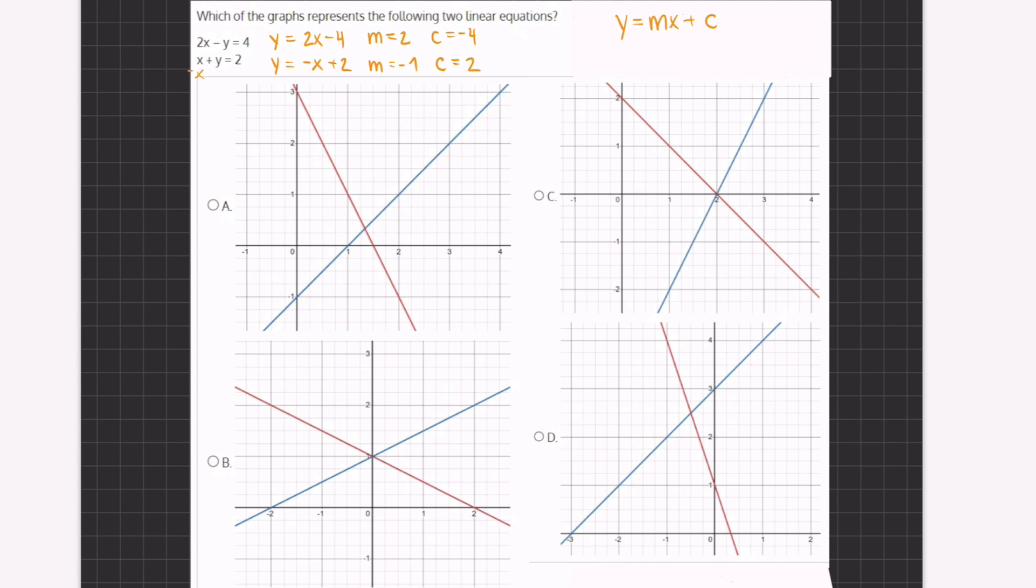Now, the easiest way to speed up our solution to find which graph represents both of these functions would be to focus on one specific element at a time. Now, usually the easier element to focus on would be the y-intercept, because you can easily look at the y-intercept to see which one crosses the y-intercept at the correct point. And if we take a look, we have to find a y-intercept at negative 4 and at positive 2.